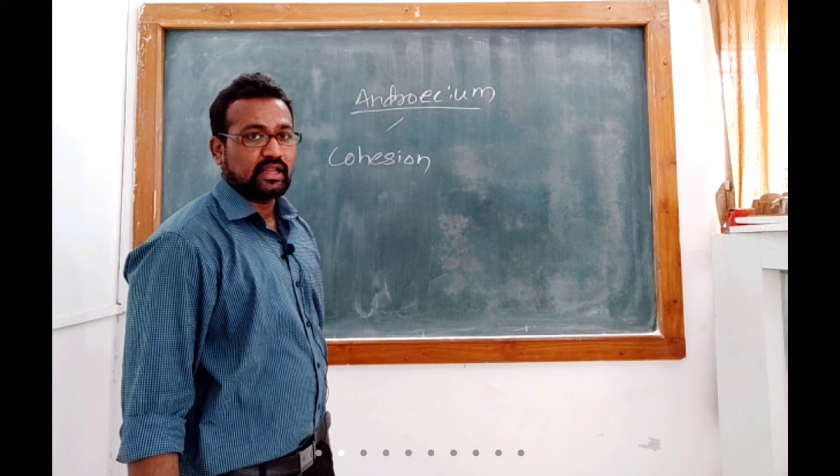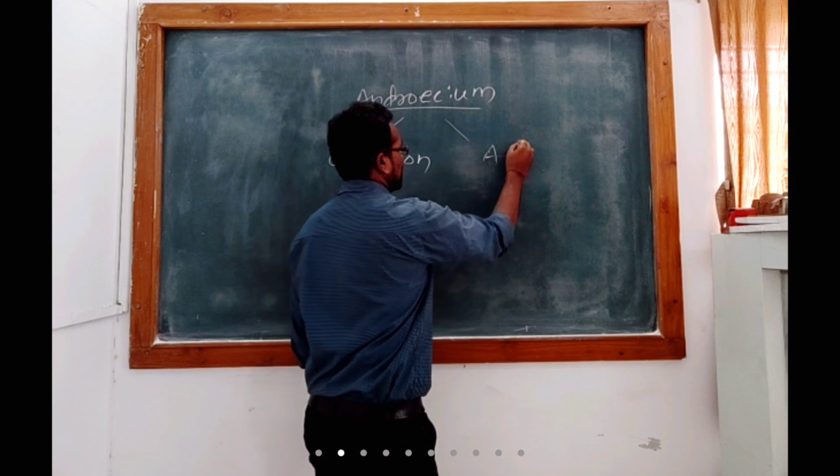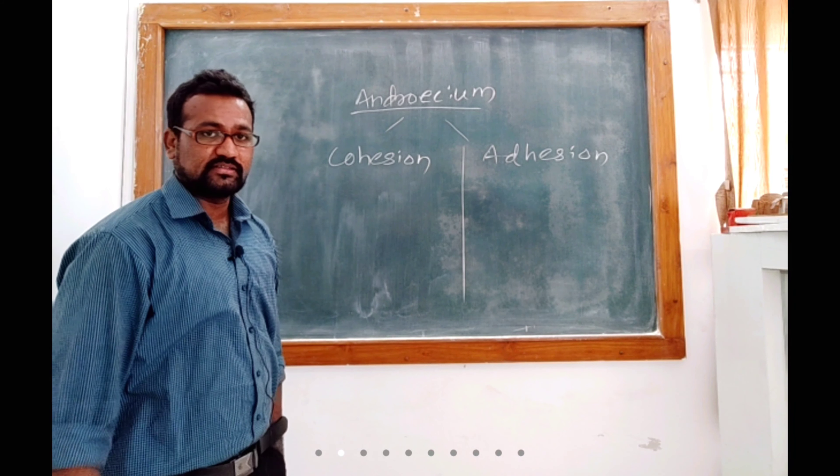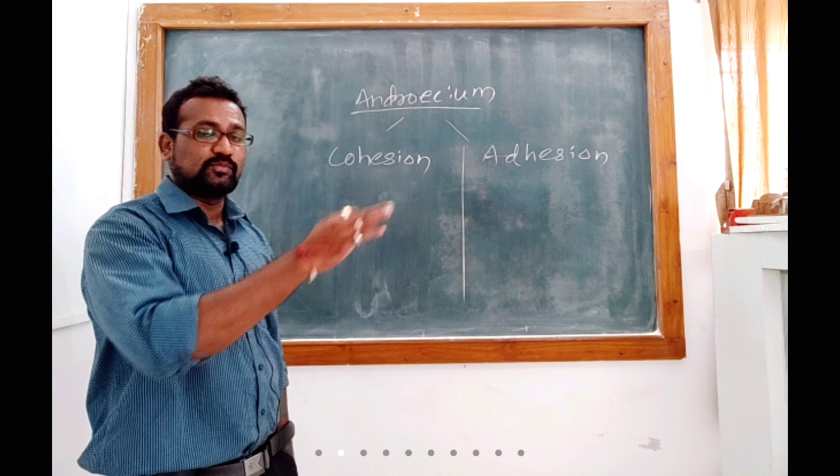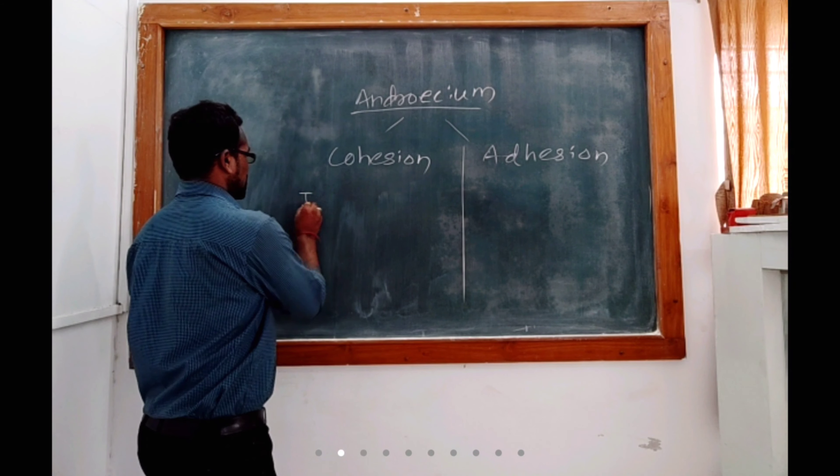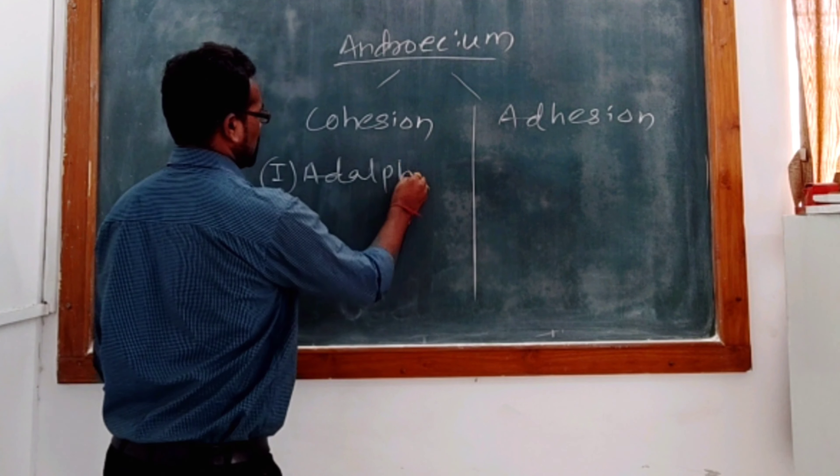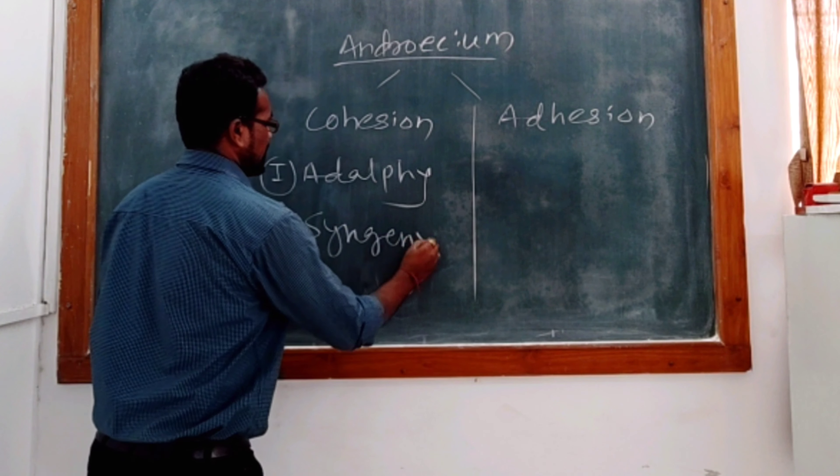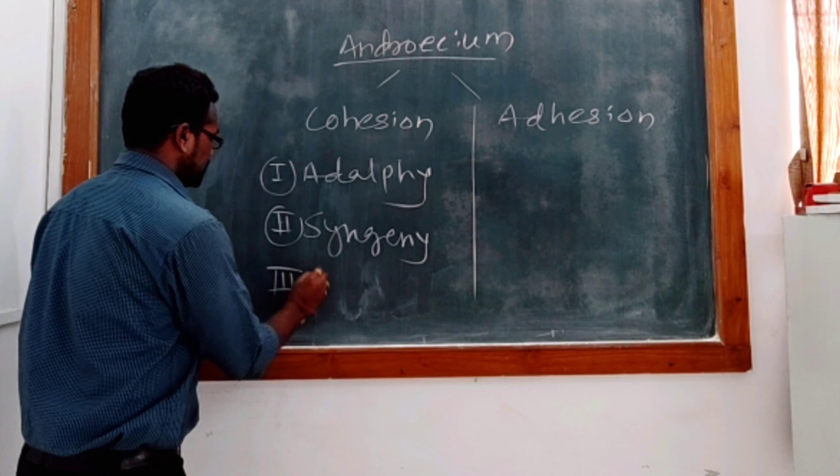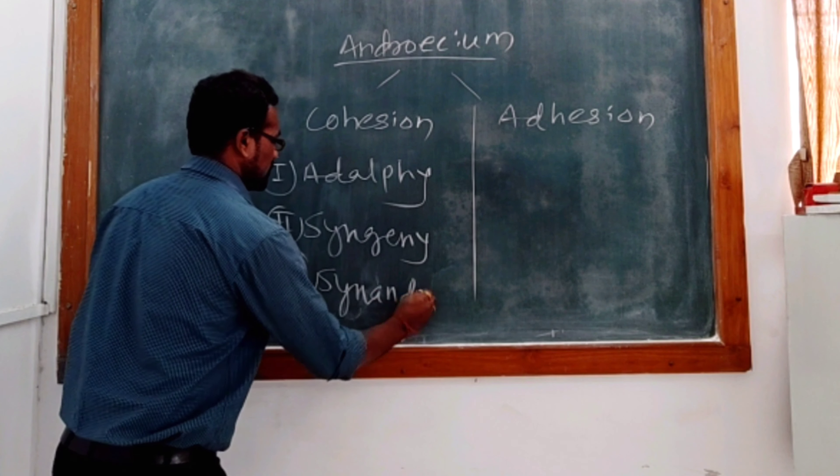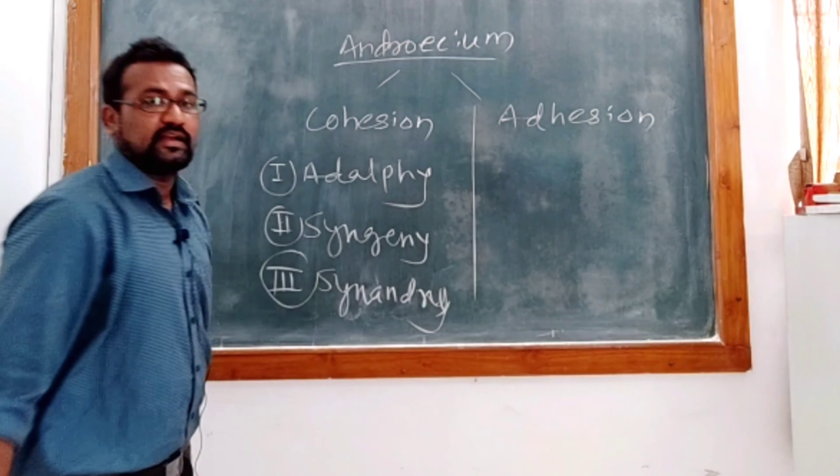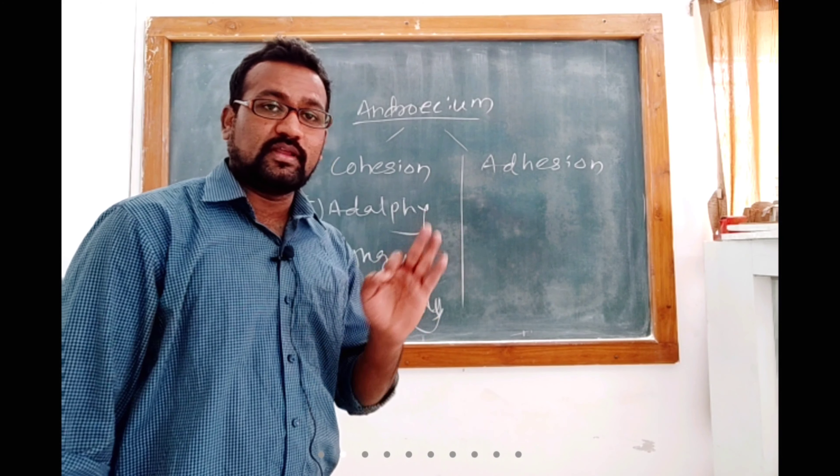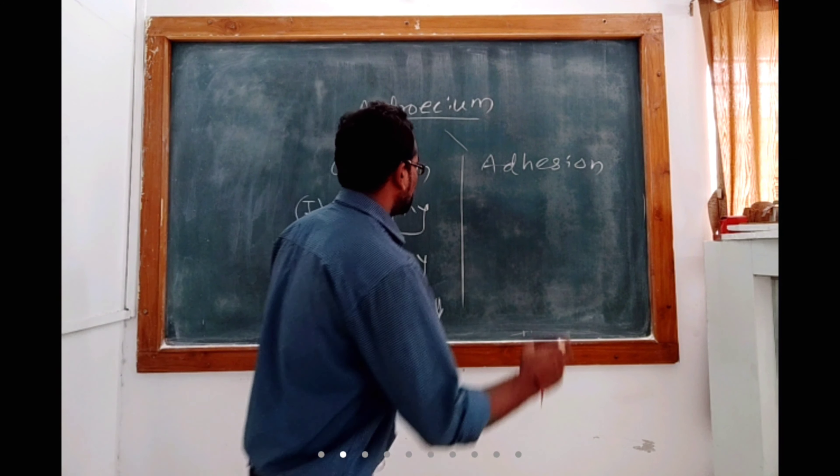Please listen carefully, it is very important. I am highlighting again and again this point: cohesion and adhesion. In cohesion you have two distinct subtypes, but actually in the textbook they have given three distinct subtypes. We will discuss. They have shown Adelphi, Syngeny, and Synandry. So I will talk about one by one and then we will cover adhesion.